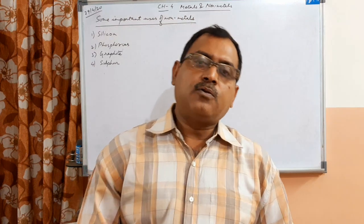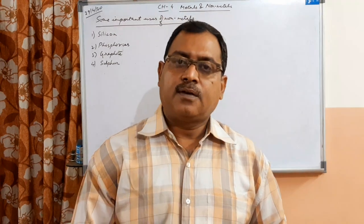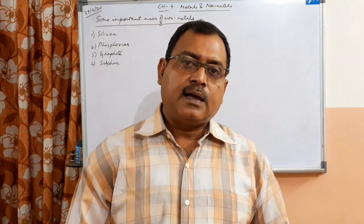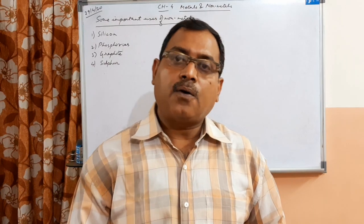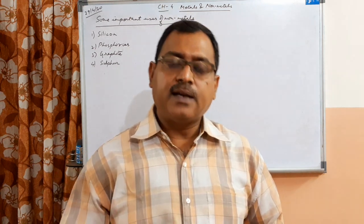Welcome back children. Today we will do some uses of few non-metals. Now you know silicon is the second most abundant element found on the earth's crust. Sand which you see — what is it? It is a compound of silicon called silicon dioxide, SiO2.